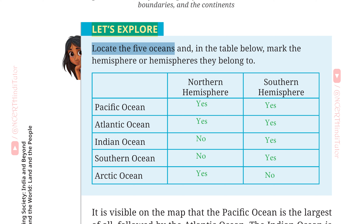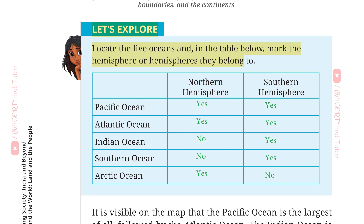Let's Explore, Page 32: Locate the 5 oceans and mark the hemisphere(s) they belong to. Pacific Ocean — Northern Hemisphere: Yes; Southern Hemisphere: Yes. Atlantic Ocean — Northern Hemisphere: Yes; Southern Hemisphere: Yes. Indian Ocean — Northern Hemisphere: No; Southern Hemisphere: Yes. Southern Ocean — Northern Hemisphere: No; Southern Hemisphere: Yes. Arctic Ocean — Northern Hemisphere: Yes; Southern Hemisphere: No.